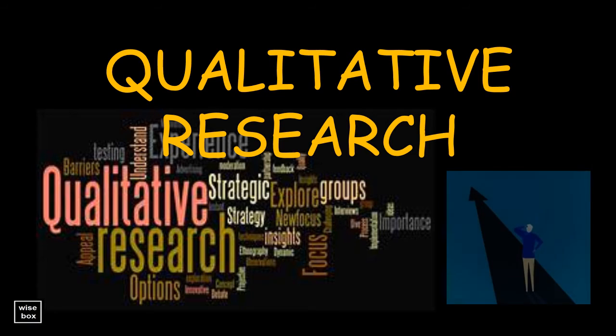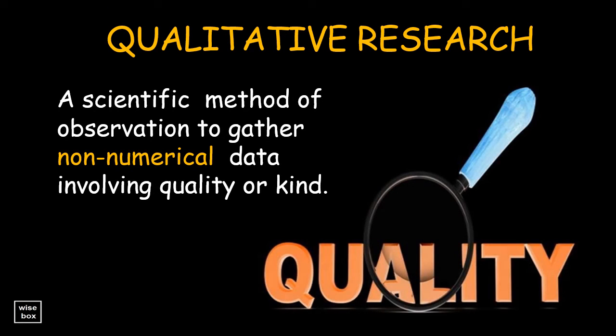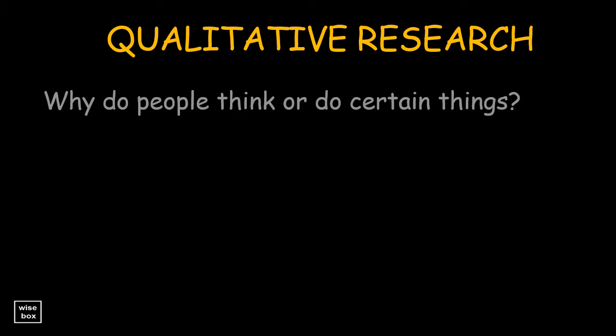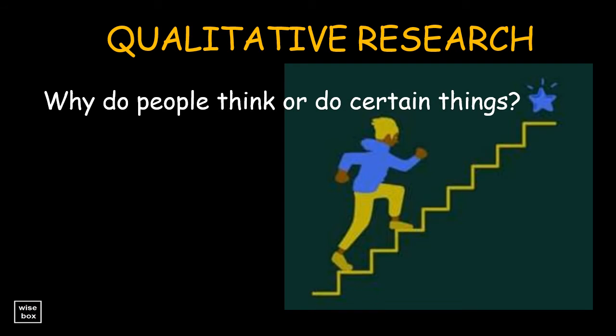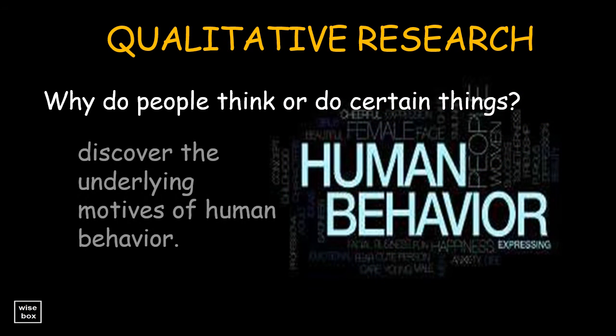For instance, when we are interested in investigating the reasons for human behavior or strategic decisions. Qualitative research is a scientific method of observation to gather non-numerical data involving quality or kind. For instance, why do people think or do certain things? Qualitative research is especially important in the behavioral sciences where the aim is to discover the underlying motives of human behavior.